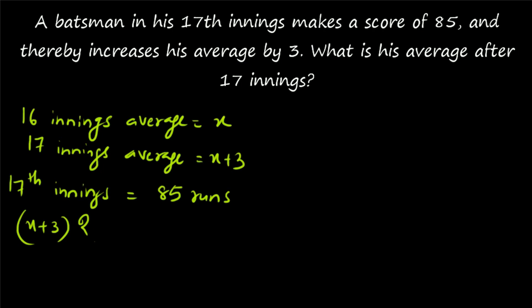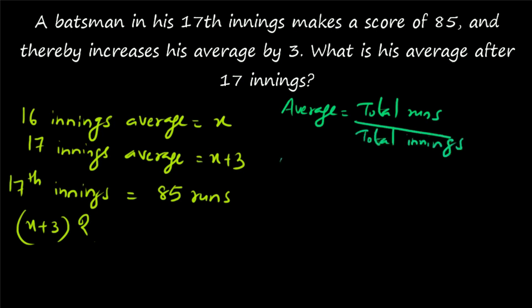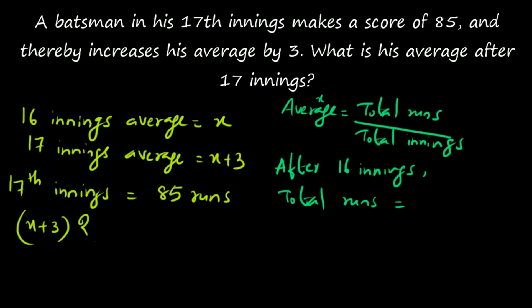If after 16 innings the average is equal to x, what is the average? Average will always be equal to total divided by number of observations. Here, average will be given by total runs divided by total number of innings. So after 16 innings, his total runs will be equal to 16 times x.